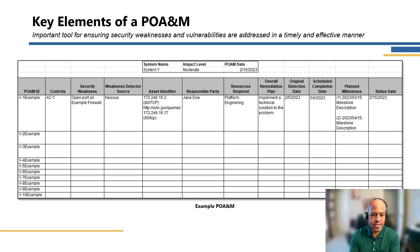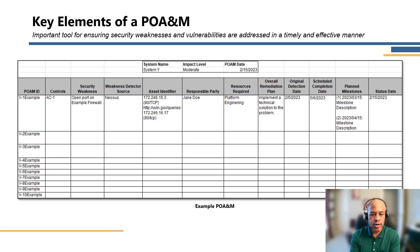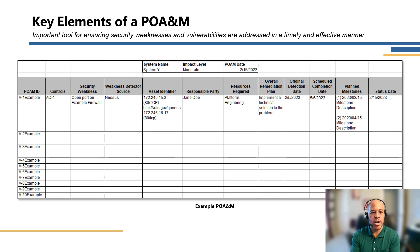For example, here we're tracking against control AC-1, security weakness, et cetera. As you can see, within a POAM you can have several POAM IDs as you track those weaknesses. Another key element is the security weakness column — a clear, concise description of the weakness and how it affects or impacts the relevant system or application.